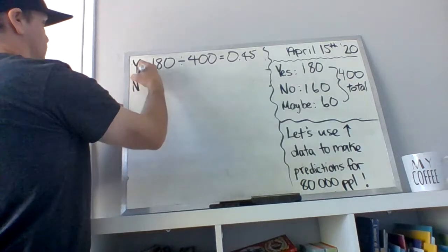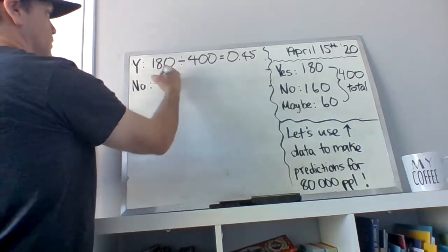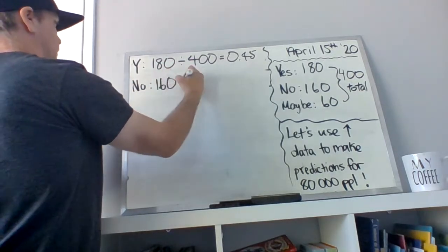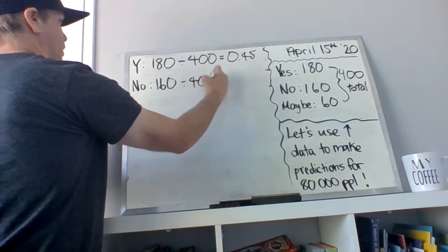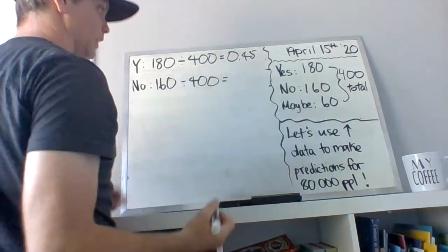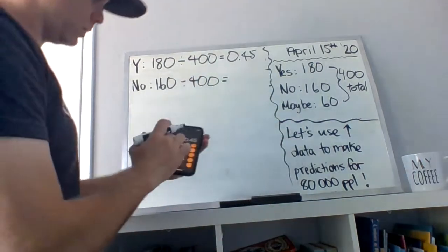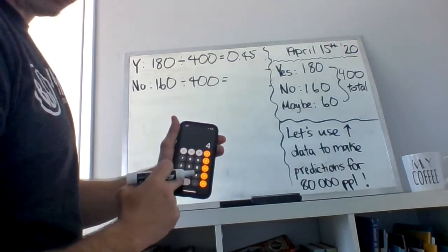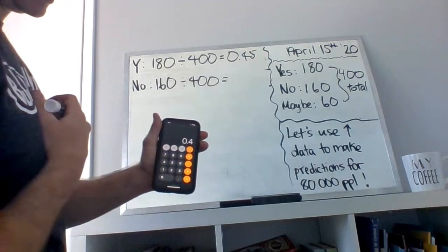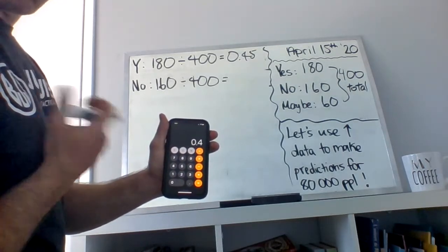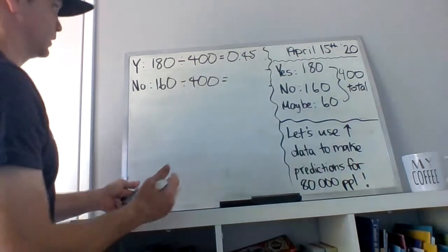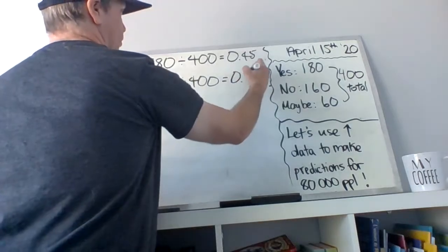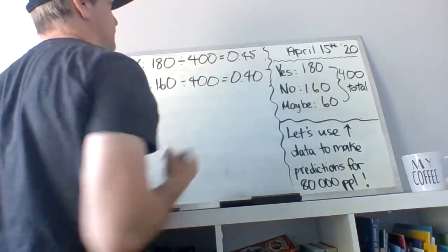And those who said no is 160 divided by 400. So we're going to go 160 divided by 400 equals 0.4. Four-tenths, 40 percent. So 40 percent said no.